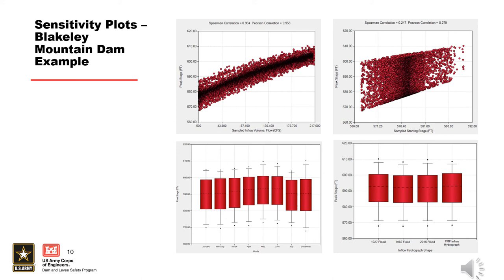Next, we see the box and whisker plot at the bottom left for flood seasonality. For this dam, floods in May generally had higher peak stages, which is expected because the starting stages tended to be higher during this month. We also see that there was a wide range of peak stages observed during each of the months. The final plot at the bottom right shows the inflow hydrograph shape box and whisker plot, where the boxes are similar for each inflow hydrograph shape, suggesting that the peak stage is not very sensitive to this set of hydrograph shapes.